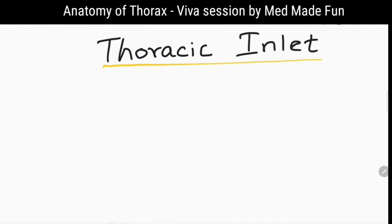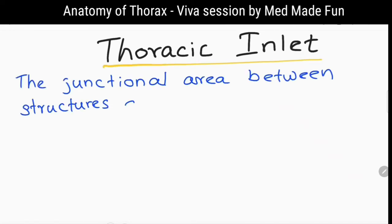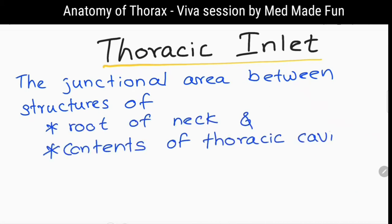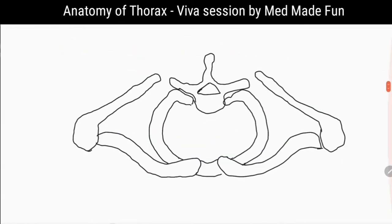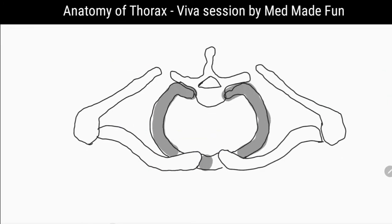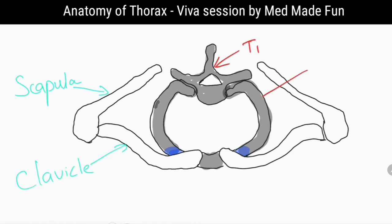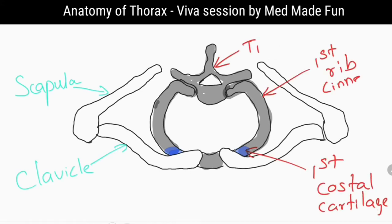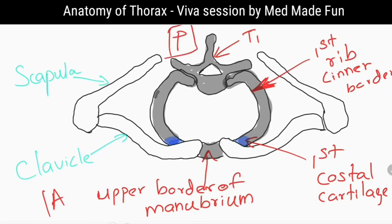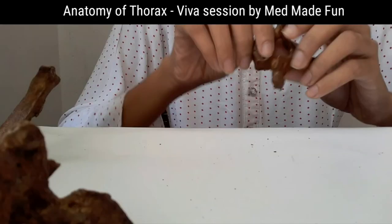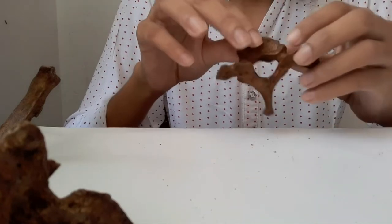What is the thoracic inlet? It is the junctional area between the structures of the root of the neck and the contents of the thoracic cavity. The boundaries are: anteriorly, the upper border of the manubrium sterni; on each side, the first rib and its cartilage; and posteriorly, the superior surface of the first thoracic vertebra.